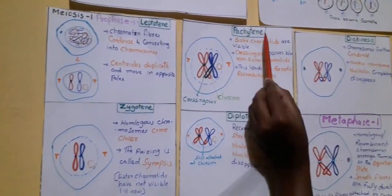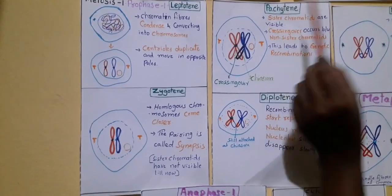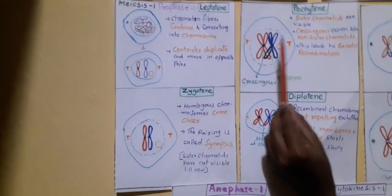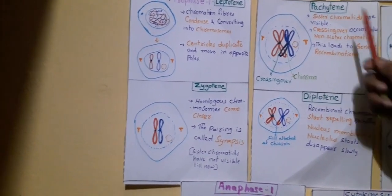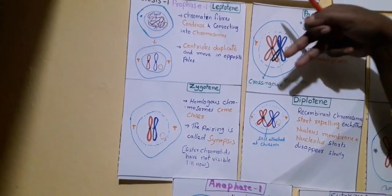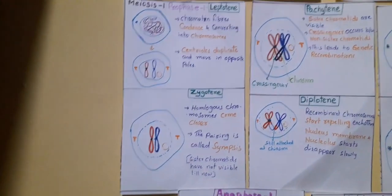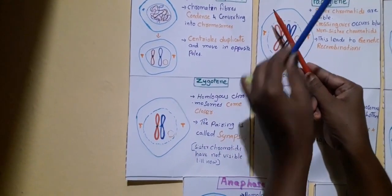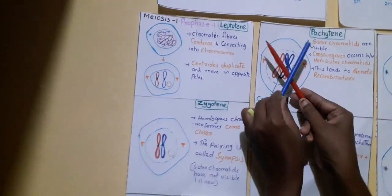Next stage is Pachytene — very, very important. The sister chromatids are visible in the Pachytene stage. In Zygotene, sister chromatids were not visible, but in Pachytene we can see the sister chromatids. The main process to remember is crossing over — crossing over between non-sister chromatids. The red colored chromatids and the blue colored chromatids cross over. This crossing over occurs between non-sister chromatids. These two red chromatids are sister chromatids, and the two blue ones are sister chromatids. One chromatid from the red chromosome and one chromatid from the blue chromosome — they cross over.